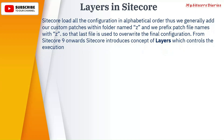Sitecore loads all configuration in alphabetical order. So generally we add our custom patches within a folder named Z. You must have observed that you used to create a Z folder and within that you would add your custom patch file, since Sitecore updates configuration in alphabetical order and the latest changes should get applied last. That's the reason you add it into the Z folder — we prefix the patch file names with Z so that the last file overrides the final configuration.